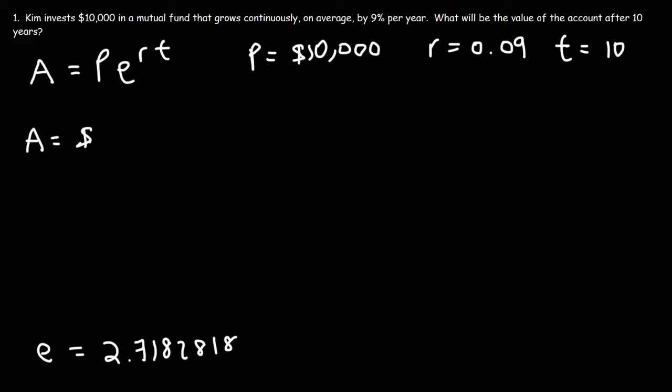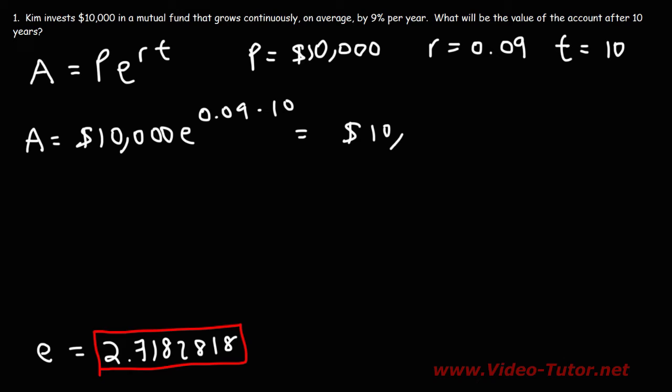So it's going to be 10,000 times E where E is this number raised to the R, 0.09 times T which is 10. So that's 10,000. E, 0.09 times 10 is 0.90.